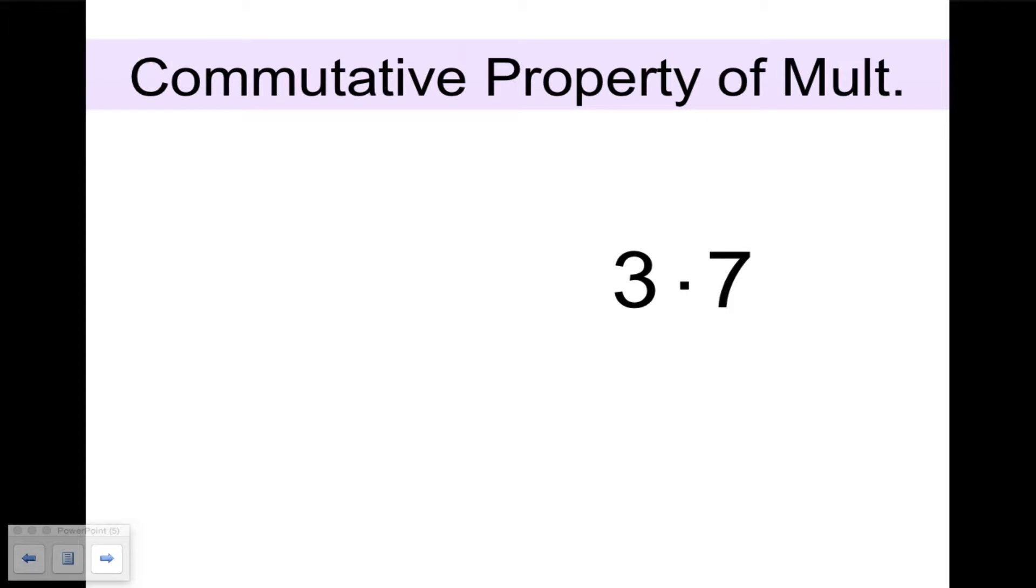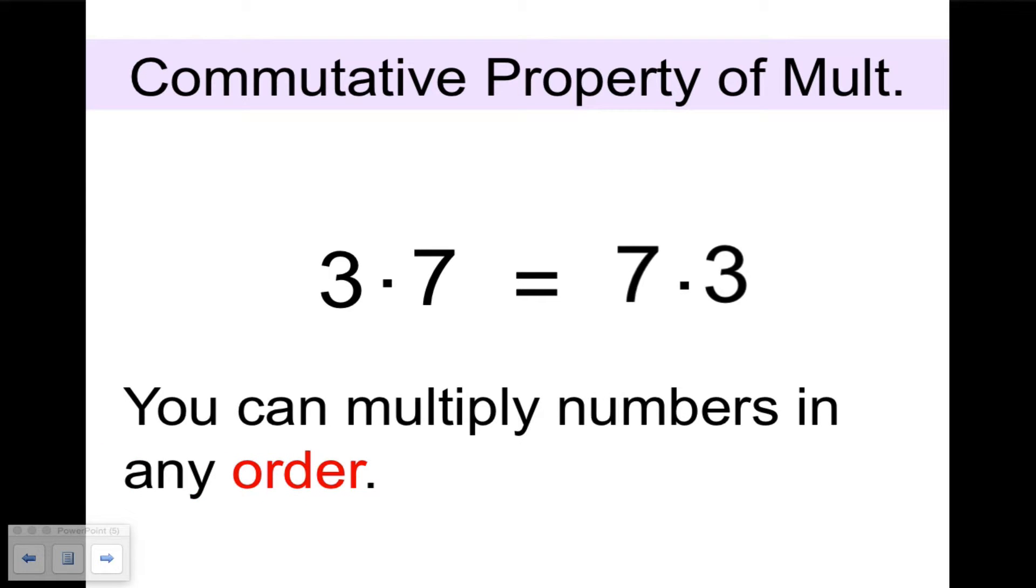The commutative property also has a commutative property of multiplication, which tells us that 3 times 7 is 21, and 7 times 3 is also 21. So 3 times 7 equals 7 times 3. In other words, you can multiply numbers in any order. Think of a question to which this is the answer for your Cornell notes.